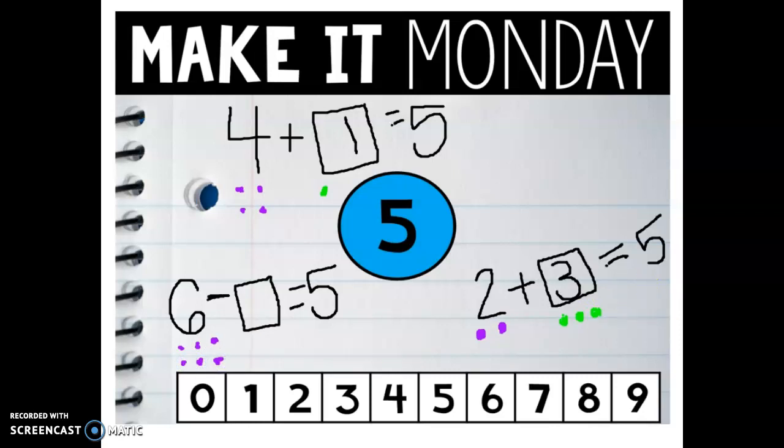Now subtract means to take away. So I need to take away one of my dots to equal five. So I'm going to cross out one of my dots. I'm taking away one from six. So now I have one, two, three, four, five left. And that's what I wanted to make. I wanted to make the number five. So what number did I take away from six? I took away one. So six minus one equals five.